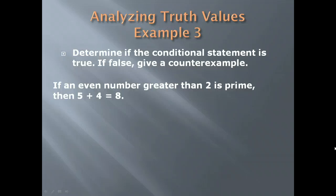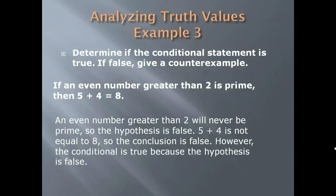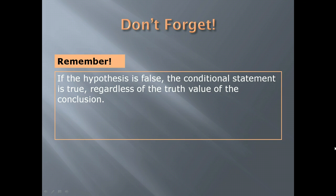Consider: If an even number greater than 2 is prime, then 5 plus 4 is 8. An even number greater than 2 will never be prime because prime numbers can only be divided by themselves or 1, so the hypothesis is false. Also, 5 plus 4 is not equal to 8, so the conclusion is false. However, the conditional is true because the hypothesis is false. Remember: if the hypothesis is false, the conditional statement is true regardless of the truth value of the conclusion.